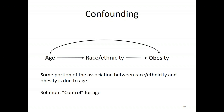Our solution is to control for age. If you see NHANES or BRFSS articles about the relationship between race/ethnicity and obesity, all of them have adjusted or controlled for age in some way — to account for the fact that the age distributions of different race/ethnic groups in the US are not the same.